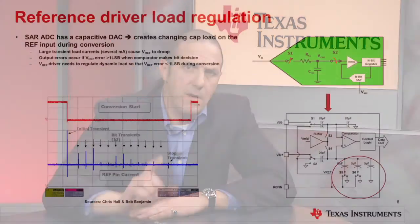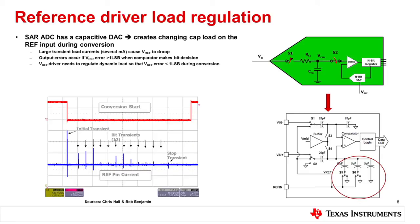For load regulation of the reference driver, keep in mind that you can have load regulation problems. The idea is to avoid transients that would cause V_ref to droop. If V_ref has an error in excess of 1 LSB, you'll have to make adjustments and pick a different voltage reference — which, as we just saw, is not a trivial task. So make sure to maintain everything well below 1 LSB.